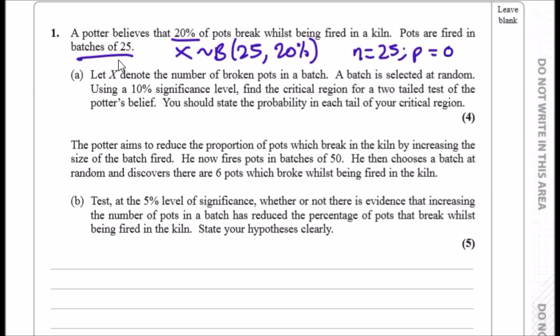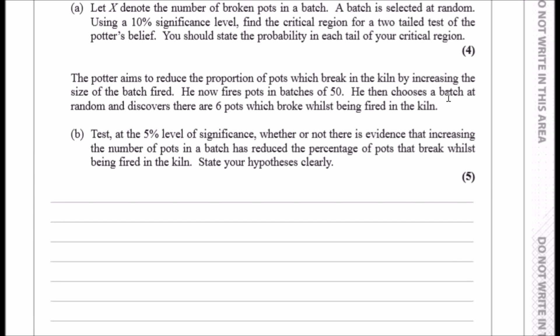A batch is selected at random. Using a 10% significance level, find the critical region for a two-tailed test of the potter's belief. You should state the probability in each tail of your critical region. All you have to do is, given it's two tails, consider a bell curve or straight line. From each tail of the test, if it's 10%, we take half of 10%, which is 5%, because it's two-tailed. We allocate 5% in this region and 5% in this region.